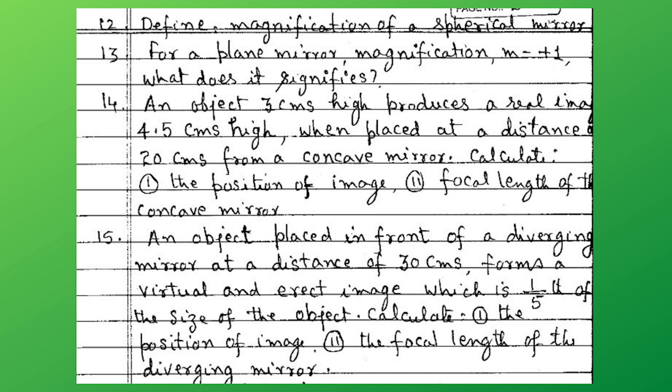There is a sum. An object 3 cm high produces a real image 4.5 cm high when placed at a distance of 20 cm from a concave mirror. Calculate: number 1, the position of image; number B, the focal length of the concave mirror. There is another sum: an object placed in front of a diverging mirror at a distance of 30 cm forms a virtual and erect image which is one-fifth of the size of the object. Calculate the position of image and the focal length of the diverging mirror.